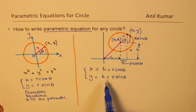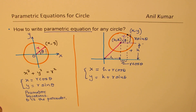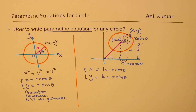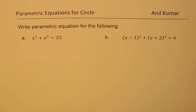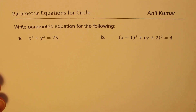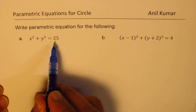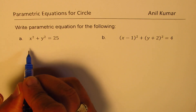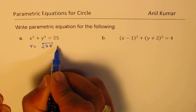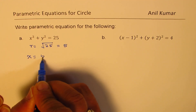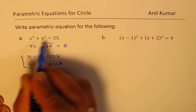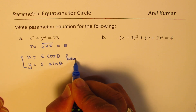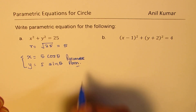So if the center is not at the origin, we use this formula. That is the base for us, and using this strategy we are going to write all our answers. Now let's begin by answering the questions. The very first question is x squared plus y squared equals 25. The radius is square root of 25, which is 5. So x equals 5 cos theta and y equals 5 sin theta — this is the parametric form.